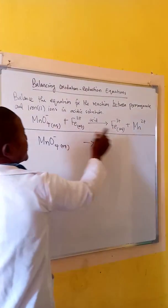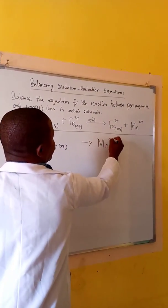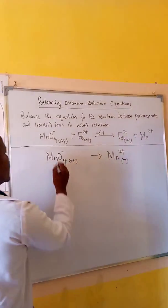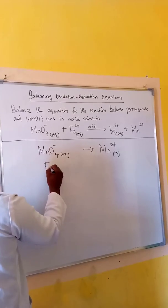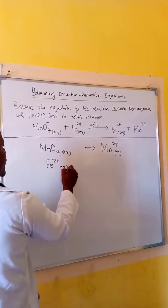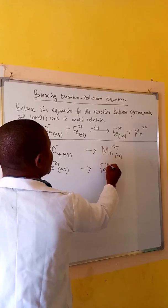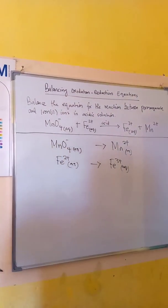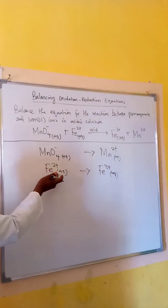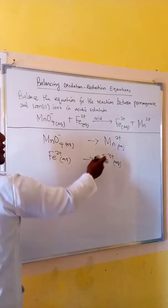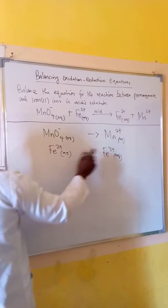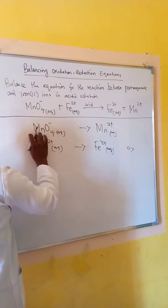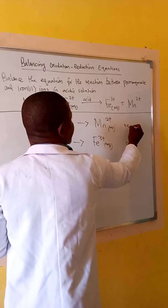We have the permanganate forming manganese(II), and iron(II) forming iron(III). For the iron reaction, there is an increase in oxidation number, so this is oxidation. For the permanganate reaction, there is a decrease in oxidation number, so this is reduction.